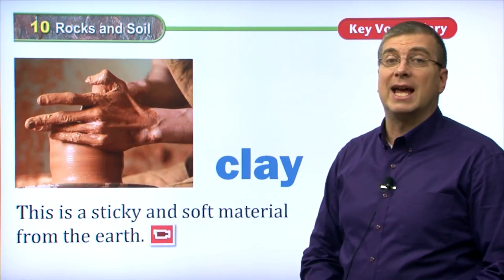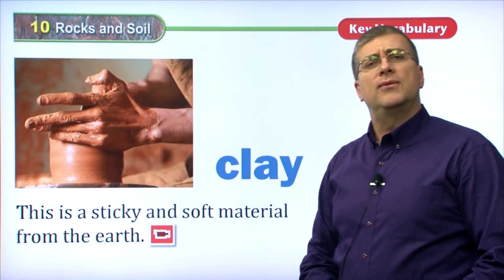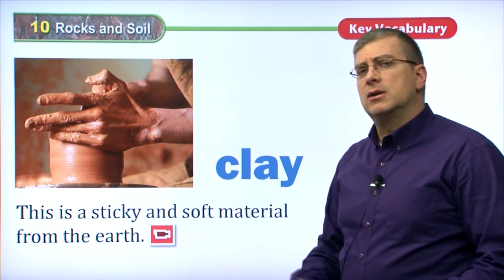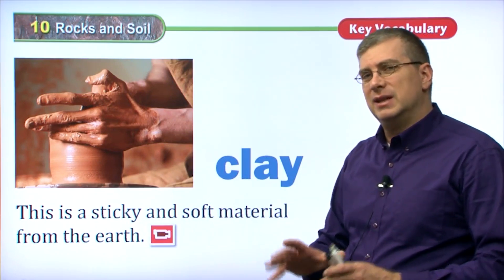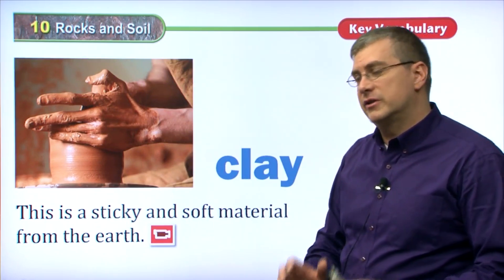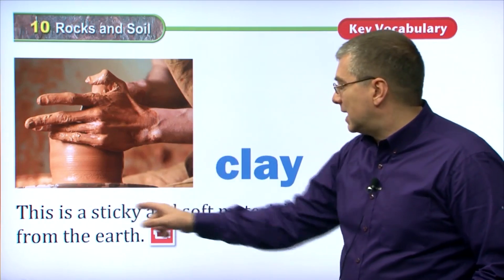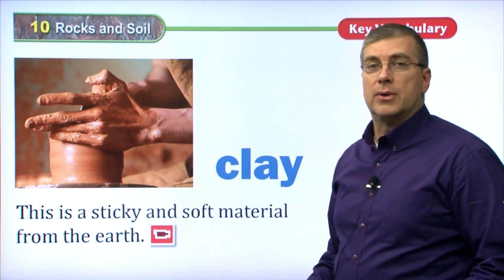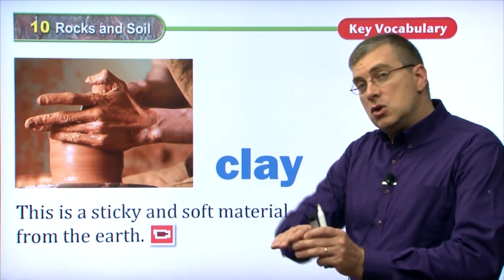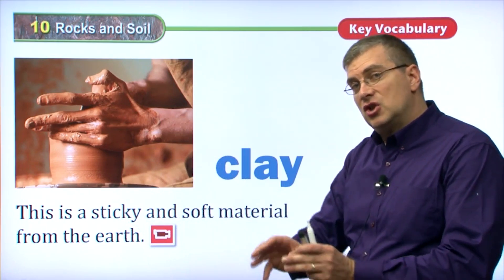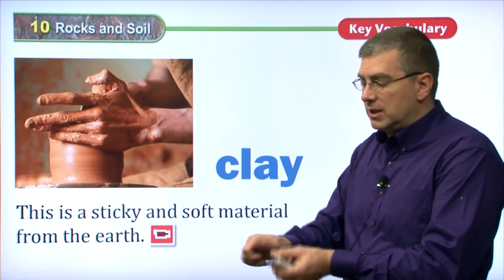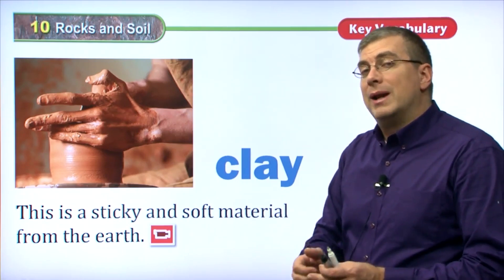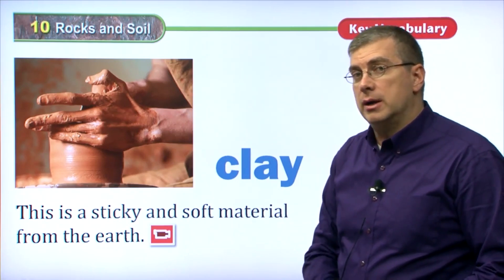Another type is clay. Where do you find clay? Usually, you can find clay near streams or lakes. It's wet. It's moist soil. Clay is a sticky and soft material from the earth. It's very soft — you can change the shape very easily. You can push it into different shapes. Now, because it's moist, when it dries, it becomes hard.